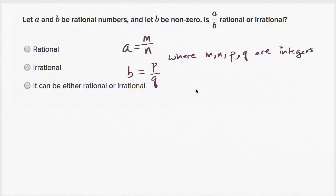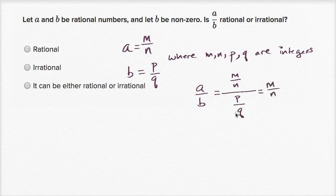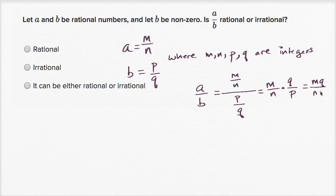So what is A over B going to be? A over B is going to be M over N divided by P over Q, which is equal to M over N times Q over P — because dividing by a fraction is the same thing as multiplying by the reciprocal — which is equal to MQ over NP. MQ is going to be an integer since the product of two integers is an integer, and NP is going to be another integer.